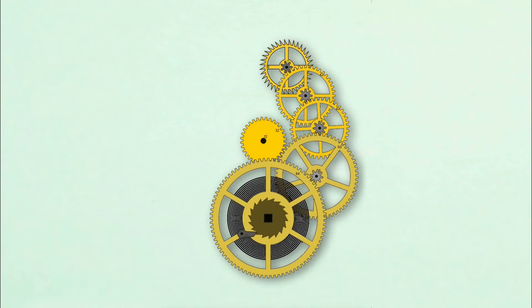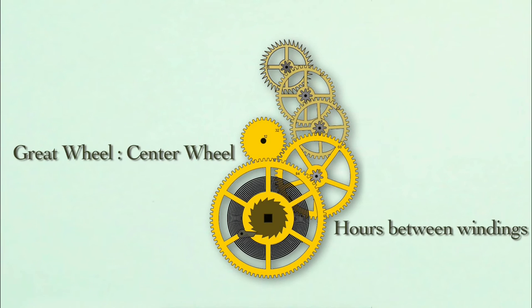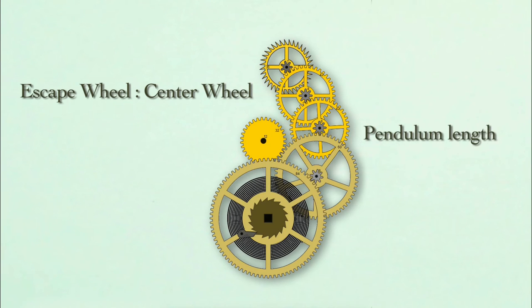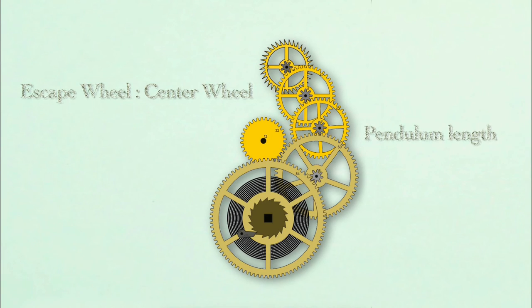So in summary, the gear ratio between the great wheel and the center wheel determines how many hours the clock will run between windings. The gear ratio between the center wheel and the escape wheel determines the length of the pendulum the clock will need to keep proper time. We need different pendulum lengths to accommodate different case designs and that's why there's so many different movements with different wheel ratios.